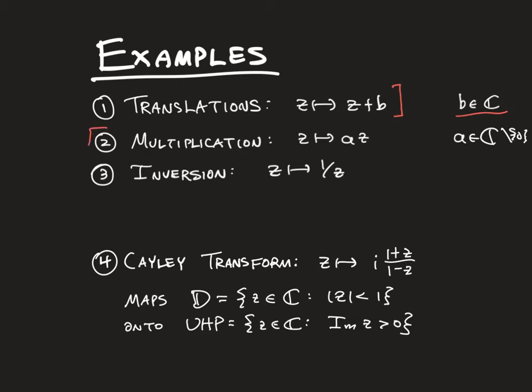Next we have multiplications, which fit under FLTs, so we map z to az, where a is non-zero in order to make it non-constant.